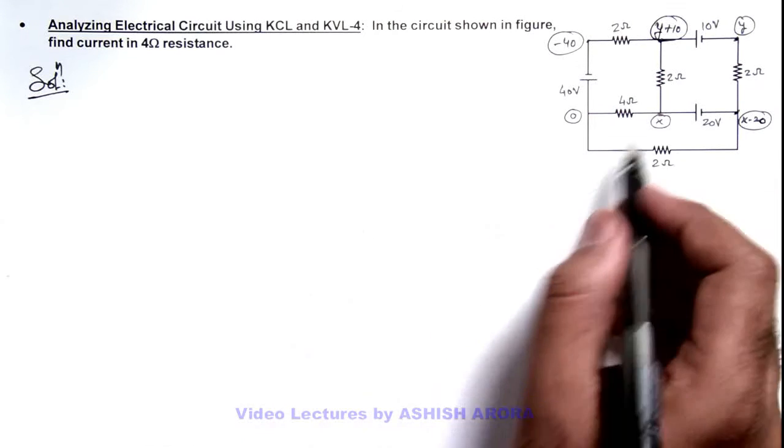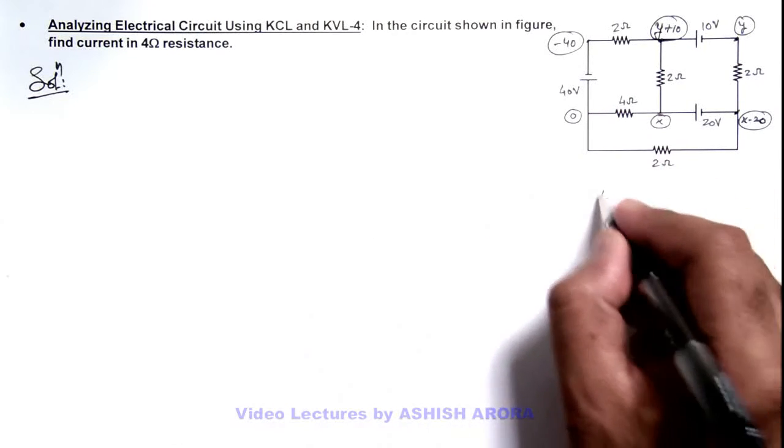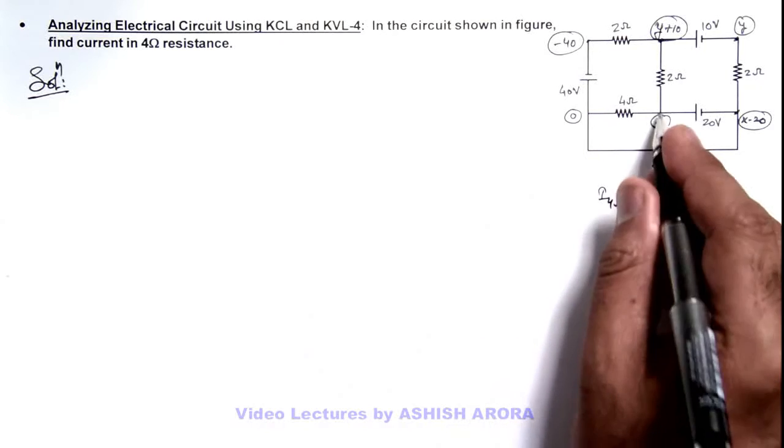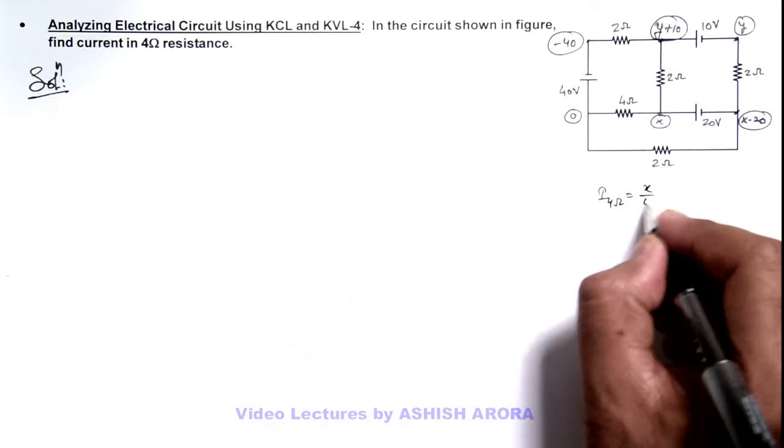Now I need to just calculate the value of x so that current in 4-ohm resistance is this potential difference divided by 4, so this will be x by 4.